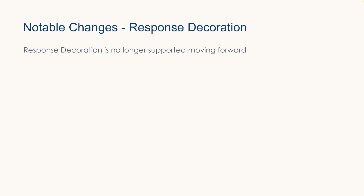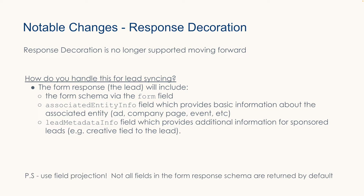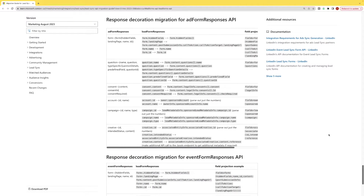The second notable change is response decoration. Response decoration is no longer supported across LinkedIn marketing APIs, and the new LeadSync API is no different. So how do you handle this change for lead syncing? The form response will now include the form schema via the form field. The new associatedEntityInfo field will provide basic information about the lead's associated entity, which could be an ad, a company page, or a LinkedIn event. The new leadMetadataInfo field provides additional information for sponsored lead types, for example the creative tied to the lead. Any additional metadata not provided will require you to make an additional API call. Not all fields in the form response schema are returned by default, so you'll want to use field projection to pull back the fields you care about.